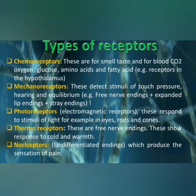Next are photoreceptors, which are electromagnetic receptors that receive light stimulus in the form of rods and cones. Next are thermoreceptors, which receive cold or warm stimulus and are free nerve endings. There are also nociceptors, which are undifferentiated endings that detect the sensation of pain stimulus.